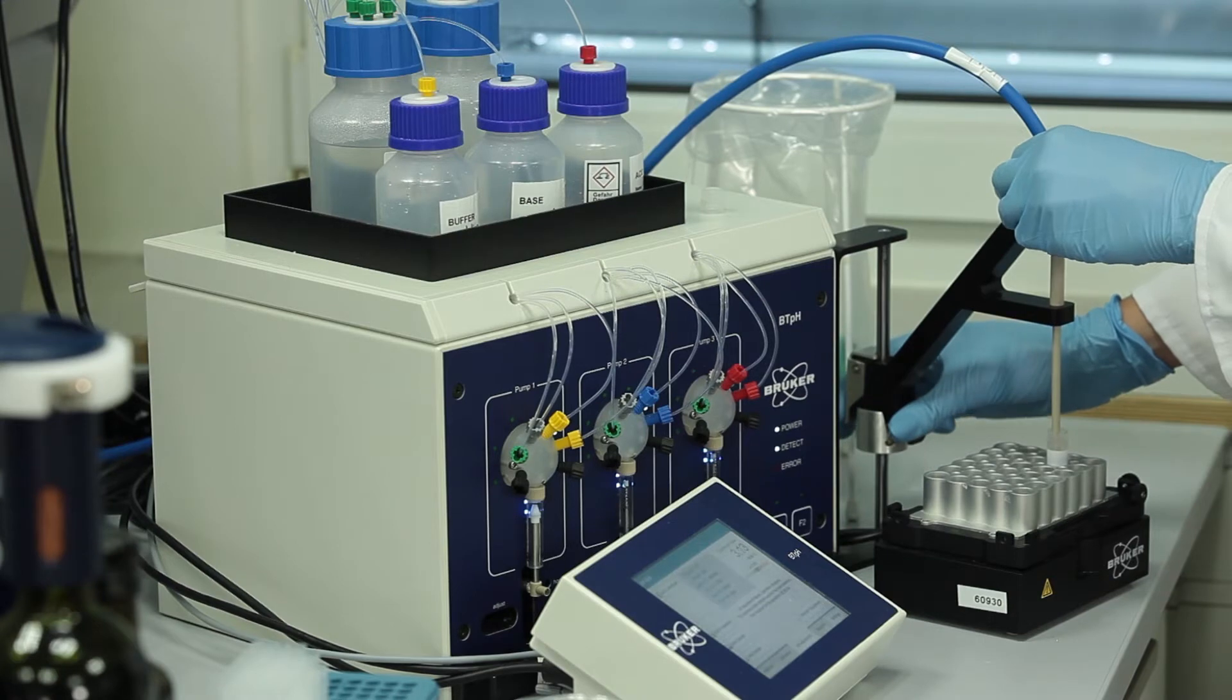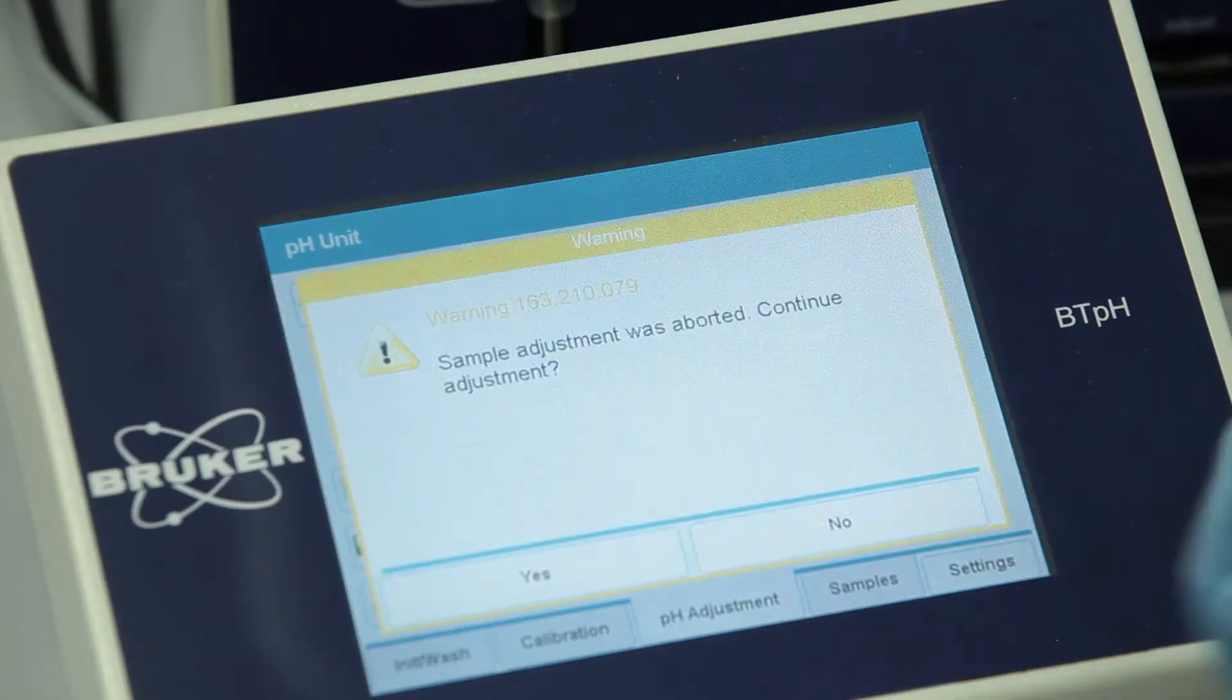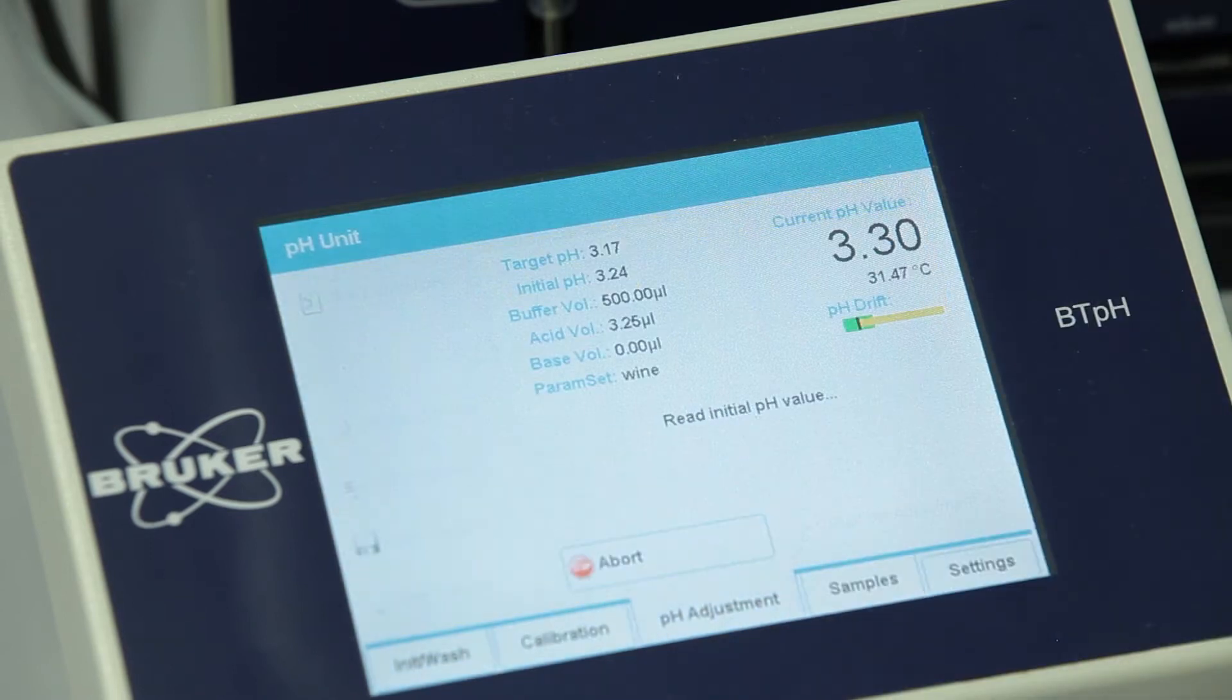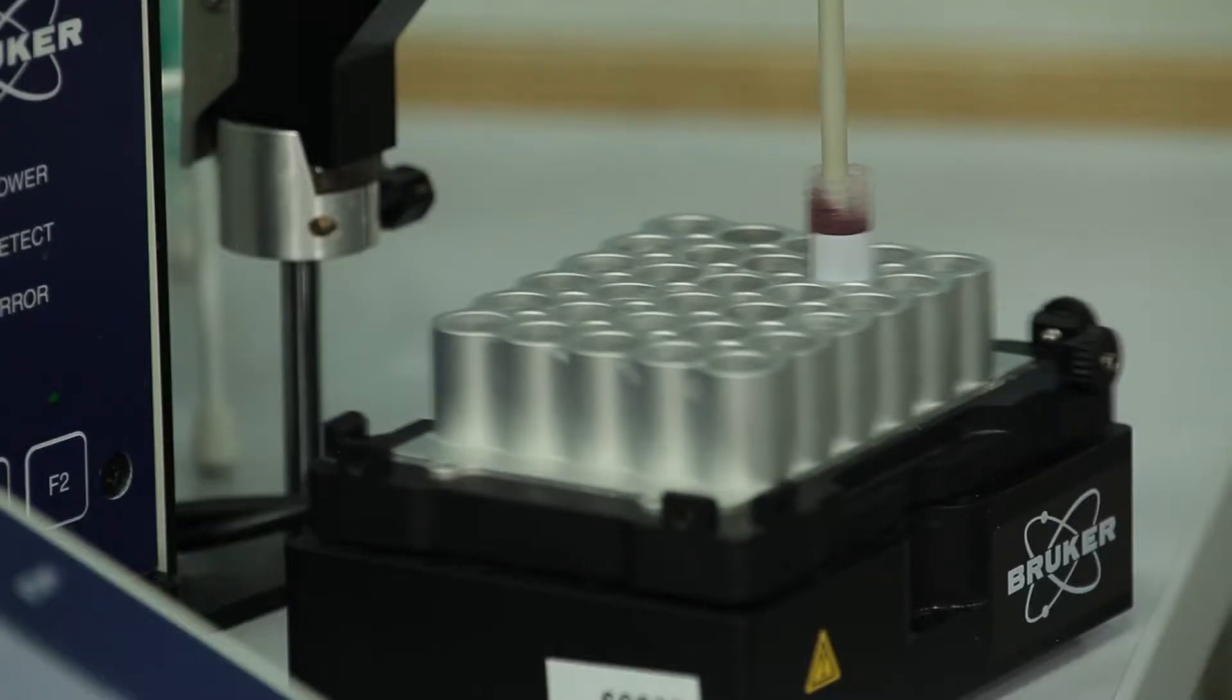Bruker's BT-PH unit was especially developed for small volumes to save time, reduce manual interaction and to generate precise dilution factors as needed for high-quality quantification.